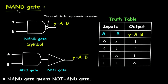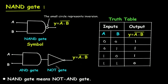NAND gate is a universal gate. This is the symbol for NAND gate — there are two inputs and one output. The small circle represents inversion. Mathematically, the output Y is given by Y is equal to A dot B, whole bar. This is the equivalent symbol for NAND gate: an AND gate followed by a NOT gate. NAND gate means NOT AND gate.